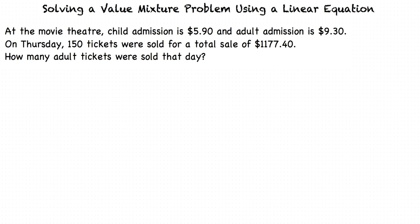That's a lot of information. How do I know what to do with all of it? Let's start by identifying a few things. Our ultimate goal is to find out how many adult tickets were sold on Thursday, so we should assign a variable to the number of adult tickets sold. Let's say that x equals the number of adult tickets sold.